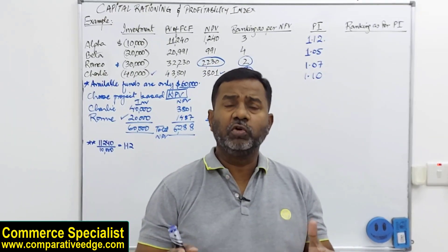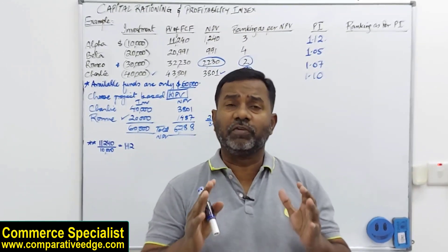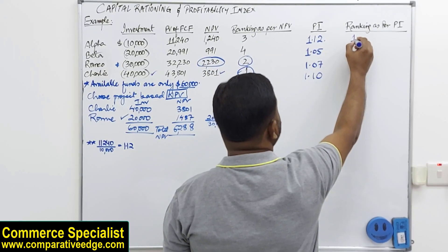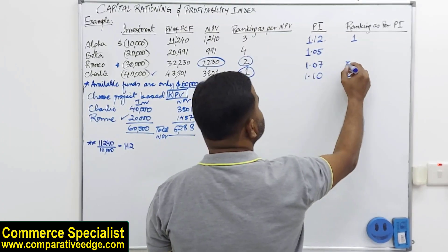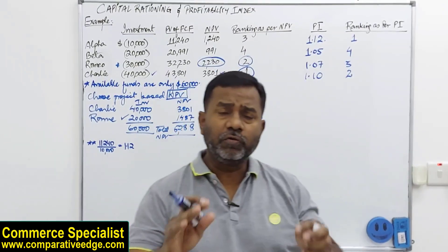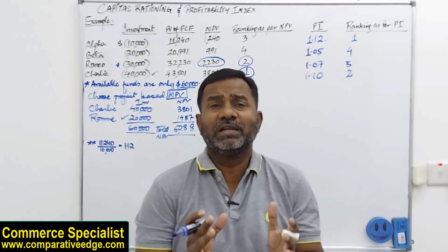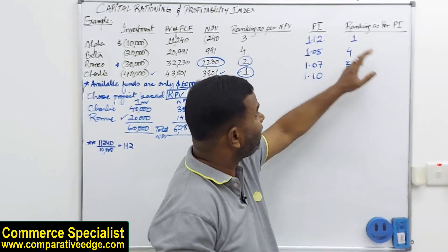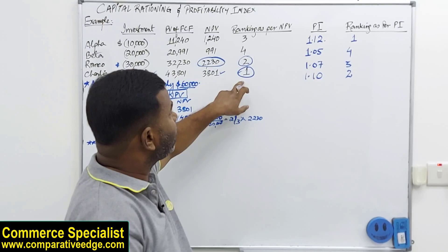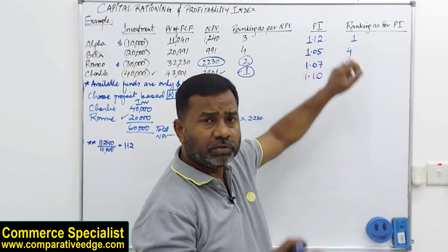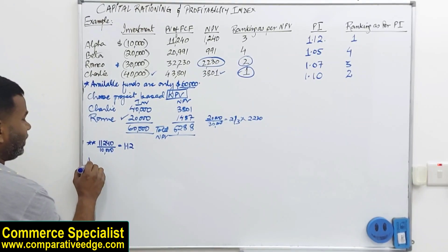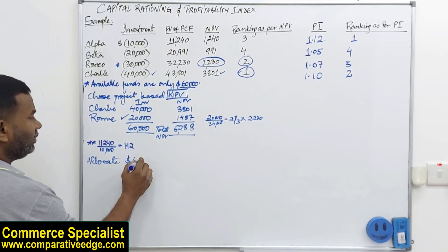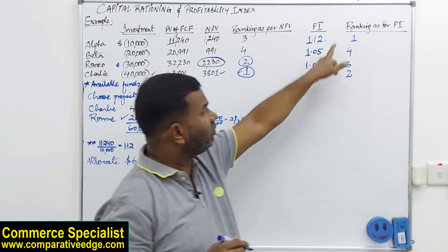So now if I try to rank my projects based on profitability index, the highest here is this one. Second highest is this. Third highest is this. Fourth highest is this. Now if you notice, when I chose NPV as the criteria, my rankings were different. When I am choosing profitability index as my criteria, my rankings are different because here this was my first criteria. Here this is my first criteria.